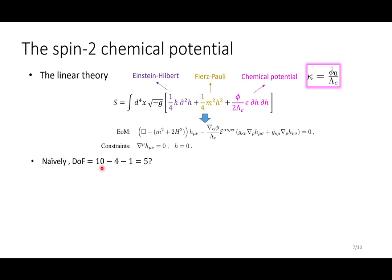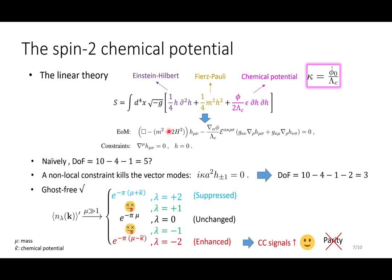Naively, one would think that the degree of freedom of this theory seems to be 10 minus the 5 constraints equals to 5, which corresponds to the little group analysis in flat spacetime. However, what we have discovered is that there is a non-local constraint hidden in this equation of motion as soon as you go to the helicity decomposition. And there is an algebraic equation which kills the vector modes.